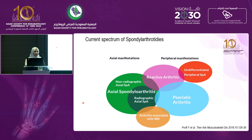Over the past few decades, our knowledge about this disease has changed. We now call this group spondyloarthritis diseases, and based on the predominant manifestations, they are divided into two groups: axial spondyloarthritis and peripheral spondyloarthritis.